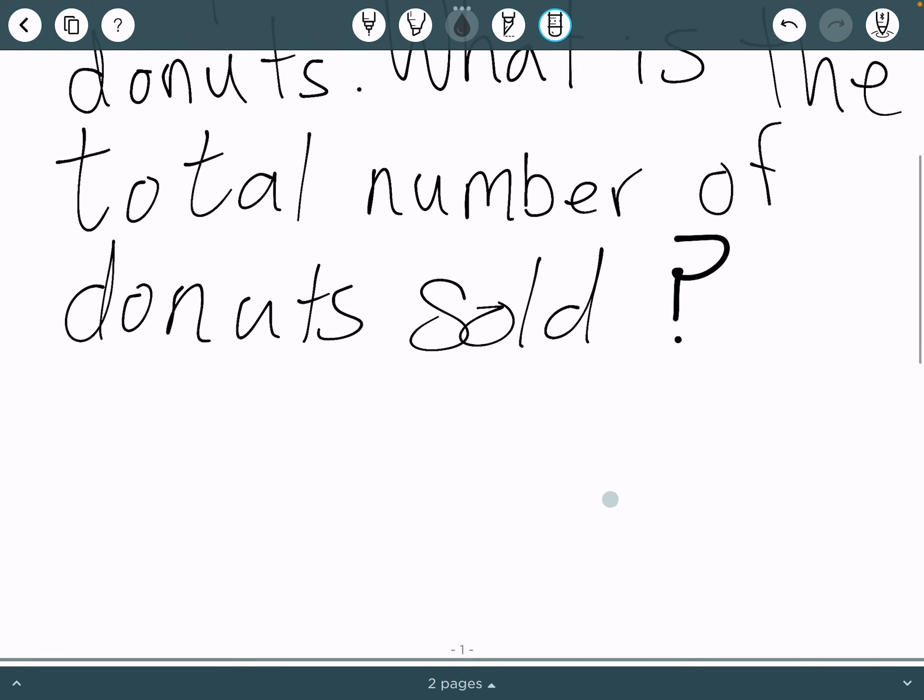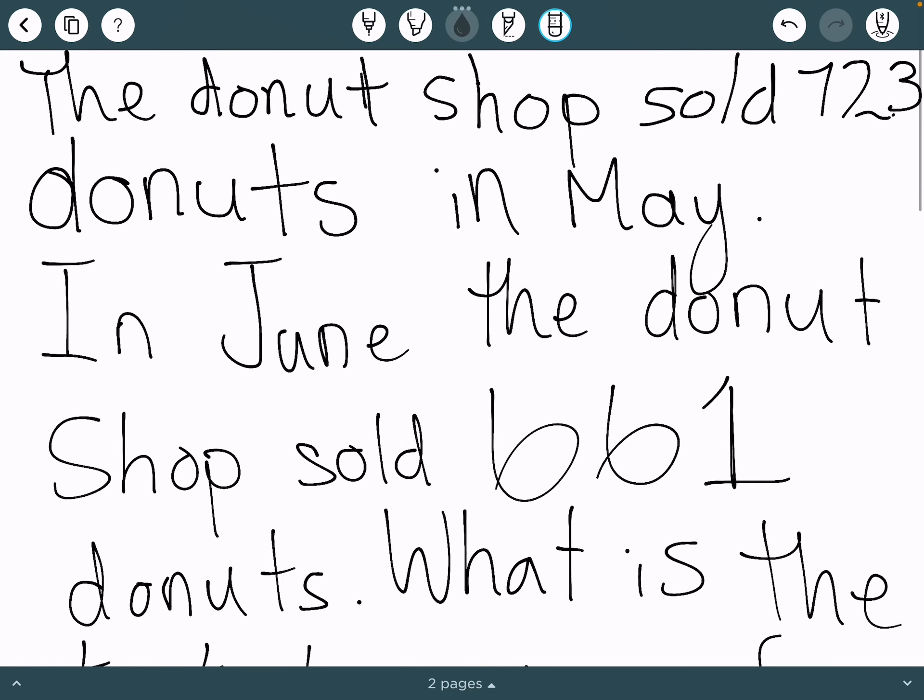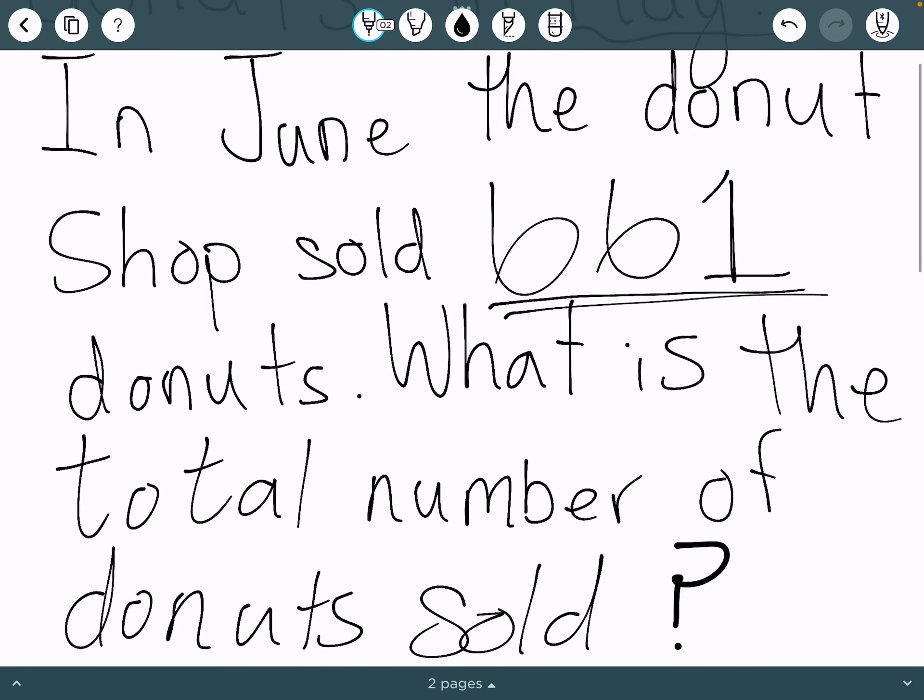In order to solve this question, we need to look at the numbers first. The bigger number is 723, which would be in May. And the smaller number would be 661, which would be in June.